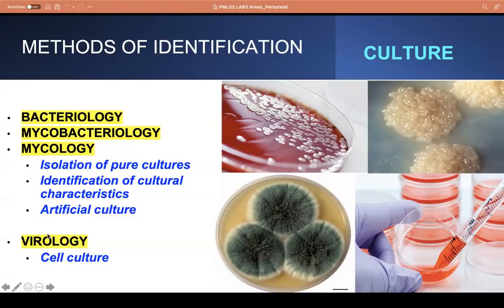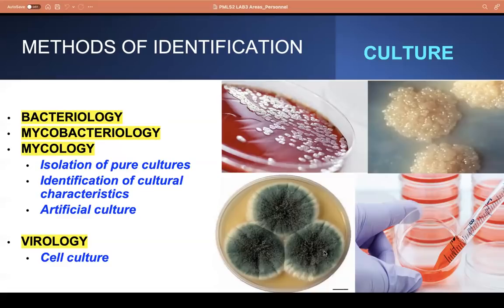For viruses, we cannot grow them on artificial culture media because viruses are obligate intracellular organisms — they require living cells to replicate. So we make use of cell cultures, usually immortal cells in the form of cancer cells, which are abnormal cell types with a longer lifespan and are chosen to grow viruses in.